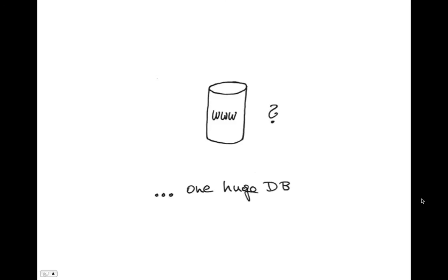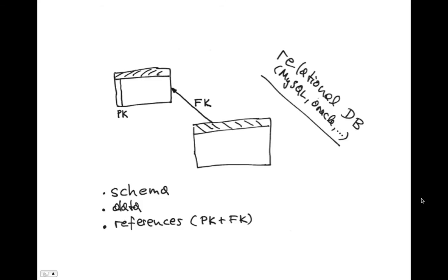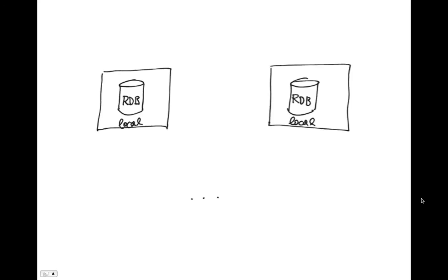The World Wide Web has one huge database — how is that possible? Let's step back for a moment. You all know the relational database thingy: MySQL, Oracle, whatever you use. You've got a schema, you've got data, and you've got references between the tables. The idea is you have a primary key and a foreign key that relates the tables to each other. However, these relational databases are kind of local — local to an application. It's not that easy to merge data from different sources.